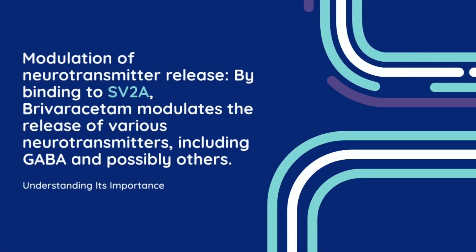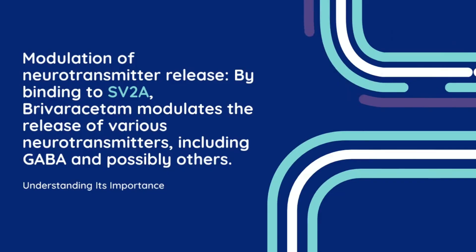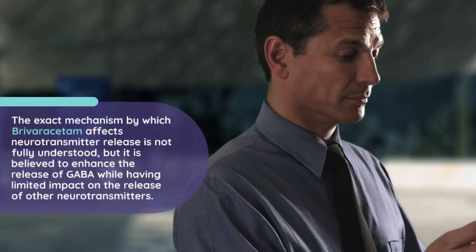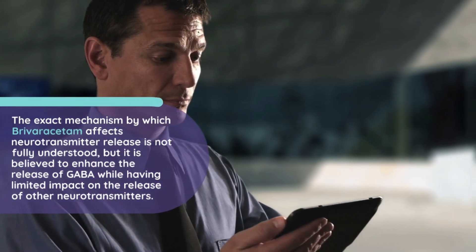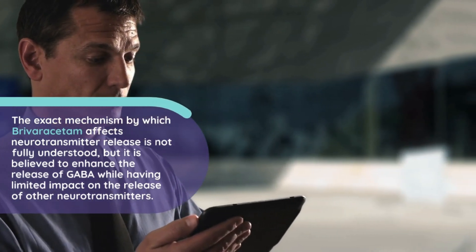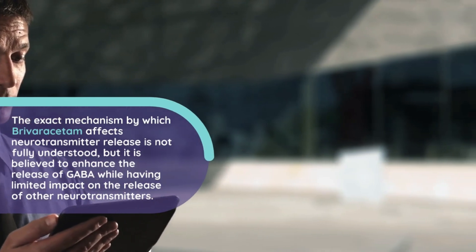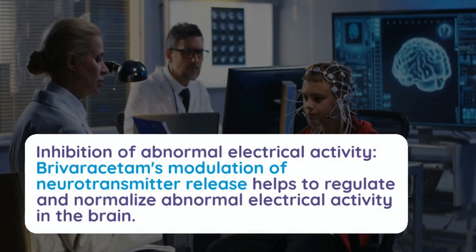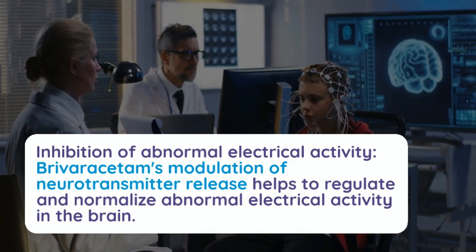Modulation of neurotransmitter release: by binding to SV2A, brivaracetam modulates the release of various neurotransmitters including GABA and possibly others. The exact mechanism is not fully understood, but brivaracetam is believed to enhance the release of GABA while having limited impact on the release of other neurotransmitters.